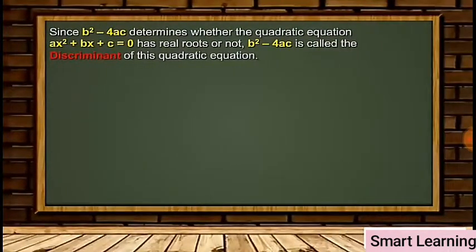Since b² - 4ac determines whether the quadratic equation ax² + bx + c = 0 has real roots or not, b² - 4ac is called the discriminant of this quadratic equation.